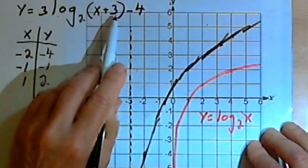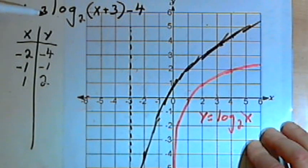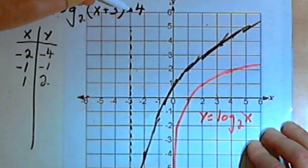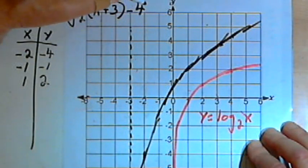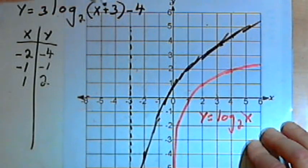And this is basically the curve of the original graph shifted over 3 units to the left, that's what this x plus 3 does, and then stretched by a factor of 3, that's what the 3 coefficient does, and then dropped down 4 units. That's what the negative 4 at the end of the function does.